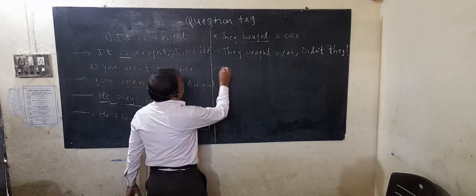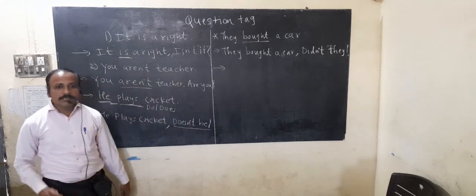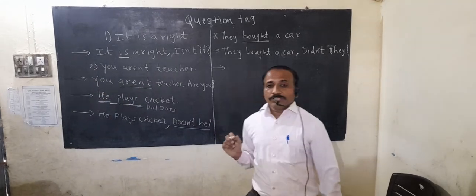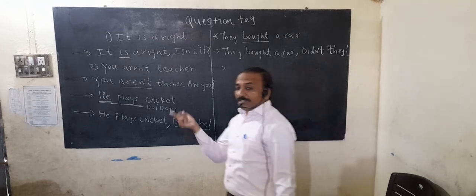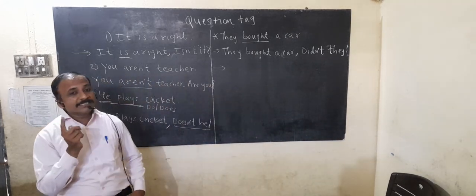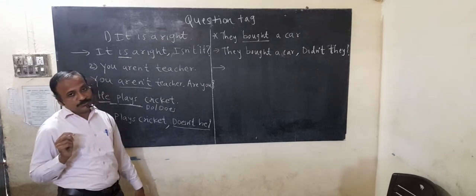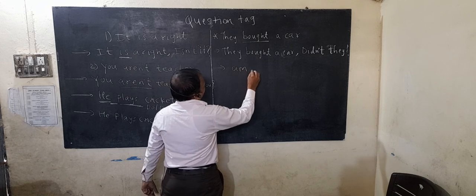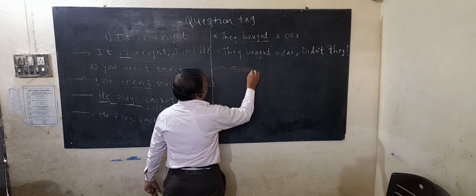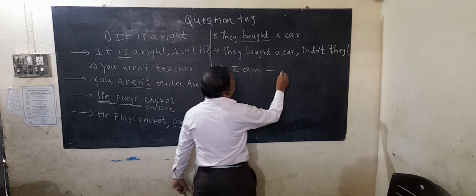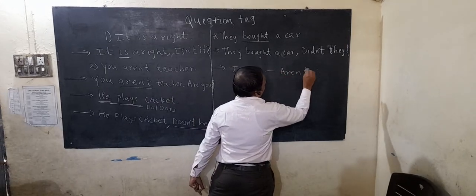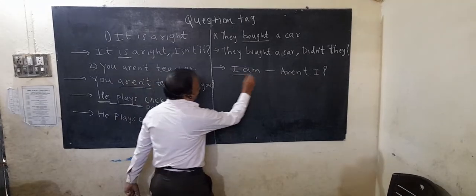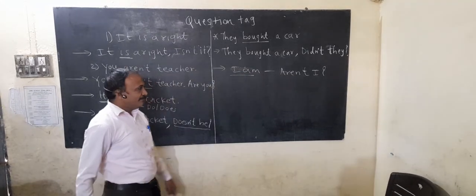So currently, let us review the rules of question tags. If the statement is positive, the question tag comes negative. If the statement is negative, the question tag comes positive. Also, whenever 'I am' appears in the statement, the question tag will be 'aren't I?'